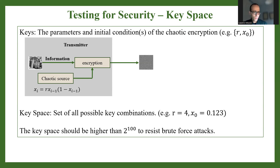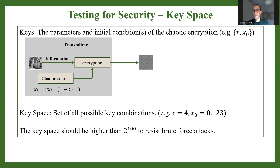The size of the keyspace — meaning all the possible combinations — should ideally be larger than 2 to the 100th in order to resist brute force attacks. That's the whole point in chaos-based encryption regarding resistance to brute force attacks.